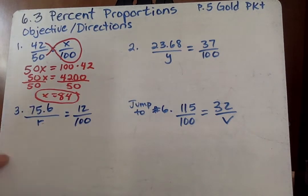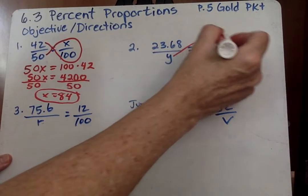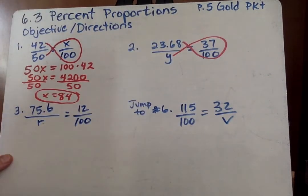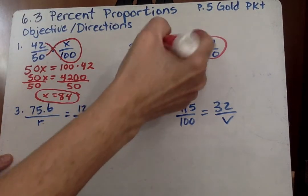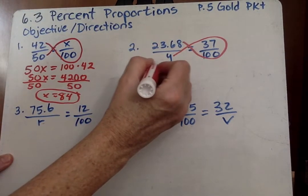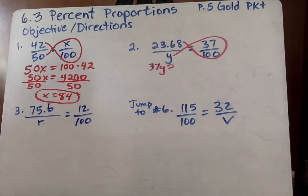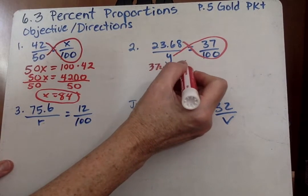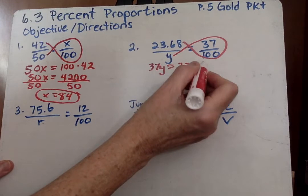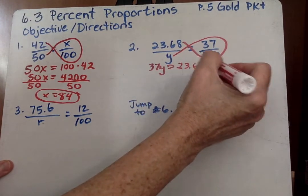Next we go on to number 2. And again, I'm going to go like that. Y times 37 is 37y equals 23.68 times 100.